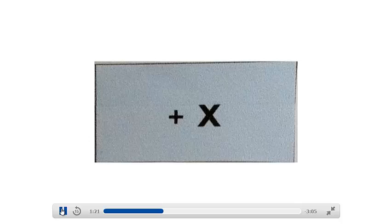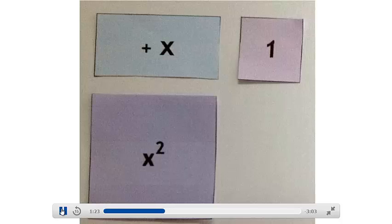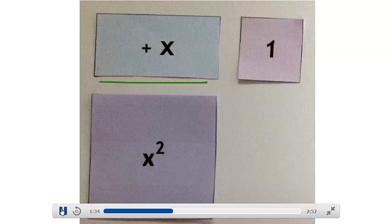Now, place your rectangle along the edges of the two squares. Can you identify the measure of the length and the breadth of the rectangle? Isn't its length equal to x and its breadth equal to one?